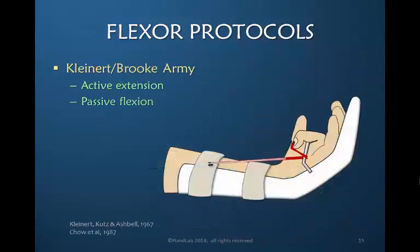Following the Duran protocol, Kleinert and associates developed the concept of applying elastic tension to keep the finger flexed but to allow extension against the resistive band — so this was active extension but passive flexion. In 1987, Chow and associates published a recommendation of adding a pulley in the palm which provided better excursion of the flexor tendon.